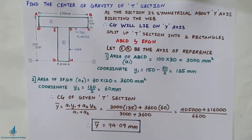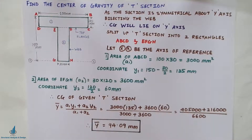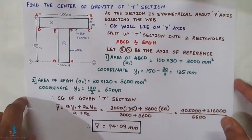Plane figures such as triangle, quadrilateral, circle, or a combination of all these have only areas but not mass. The center of area of such a figure is known as the centroid or center of gravity.